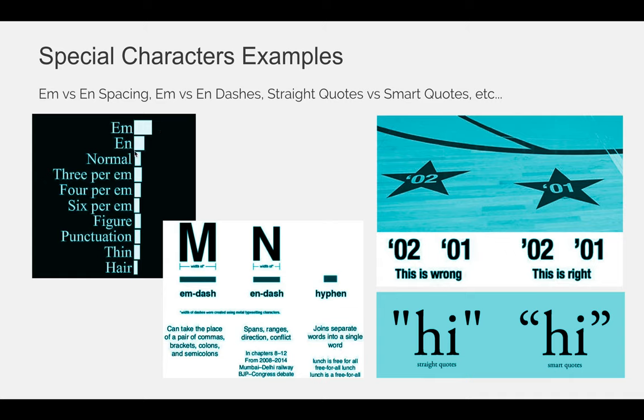When you add M or N spacing or M or N dashes, you can expect to get a longer space or a longer dash if you use the M action, and you get a shorter dash or space if you use the N option.